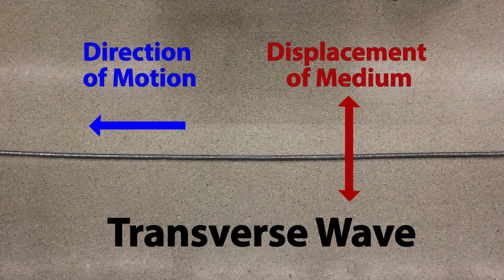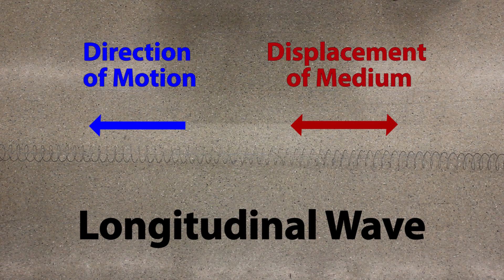If we change our medium we can demonstrate a different type of wave. We've switched to a slinky spring, stretched quite a bit, and I'm going to create a wave along it. This wave moves quite fast so we may need to slow it down. What you should be able to see is that the medium was displaced forwards and backwards — in the same direction as the wave moved. This type of wave is called a longitudinal wave. Sound waves, or acoustic waves, are an excellent example of a longitudinal wave.